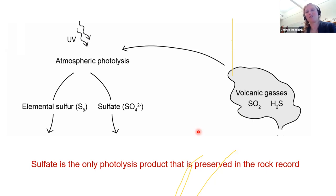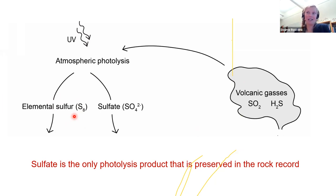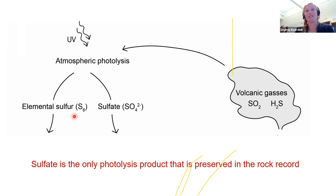The barite may be our best constraint on the atmospheric source reactions producing this mass-independent isotope fractionation, because sulfate is the only photolysis product directly preserved in the rock record. The other product — elemental sulfur — is preserved only indirectly in sulfide minerals like pyrite, involving redox processes and potential mixing of different sulfide sources, which may disturb MIF signatures. The sulfate is directly stored in barite as sulfate, so the Δ33S sign is preserved, muted only slightly by mantle-derived sulfur.